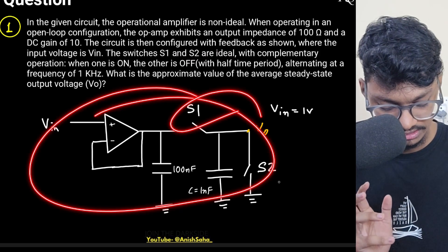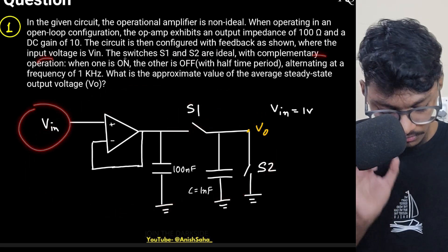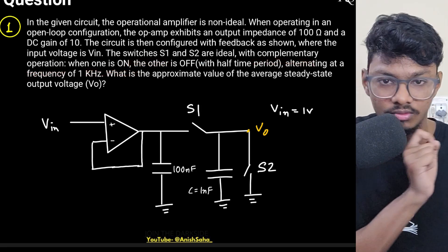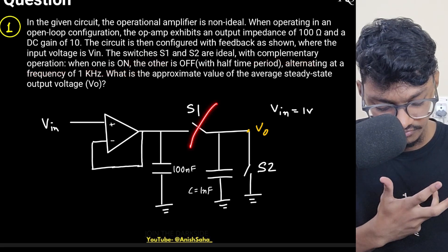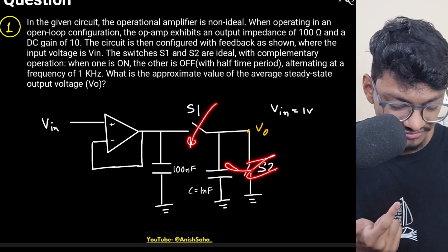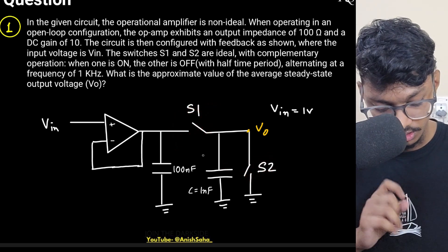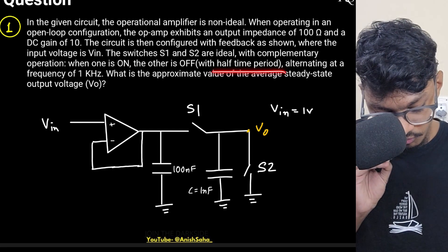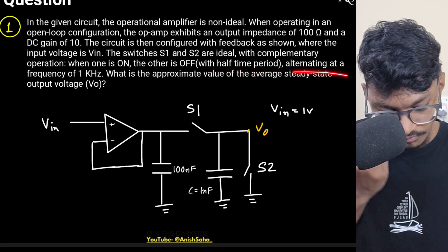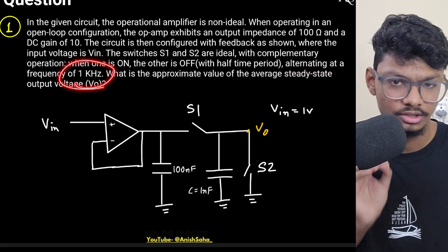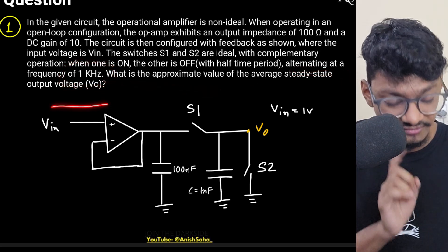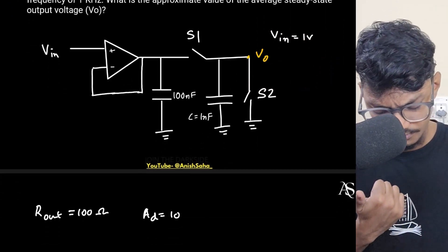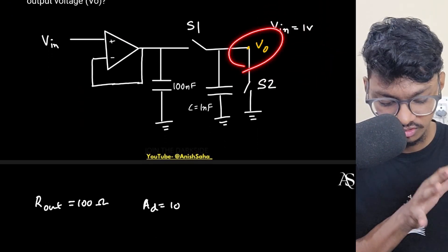The circuit is configured with feedback and switches S1 and S2 are ideal with complementary operation — when one is on, the other is off. Each switch is on for half a time period, alternating at a frequency of 1 kilohertz. The question asks for the approximate average steady-state value of the output voltage Vo, with Vin given as 1 volt.